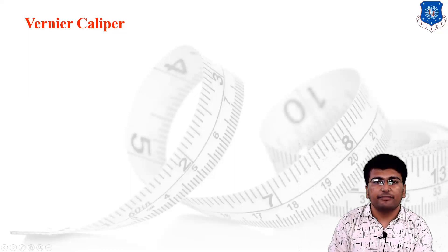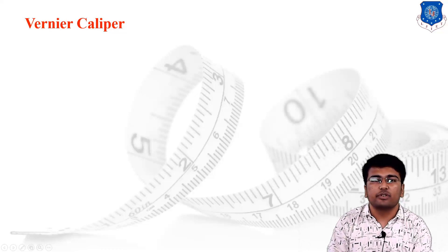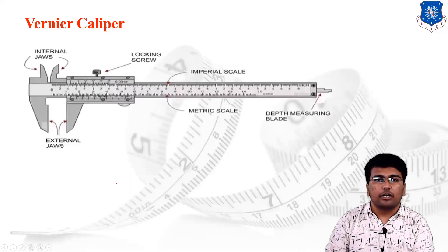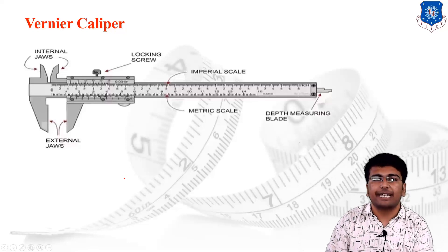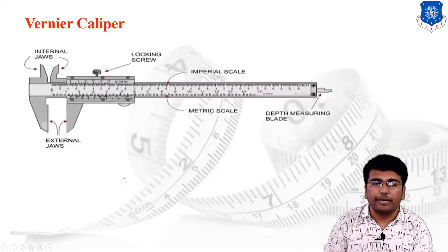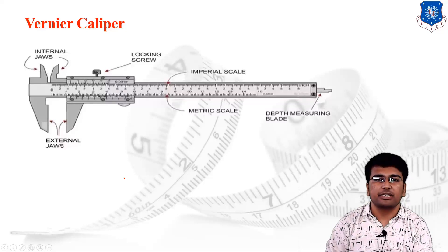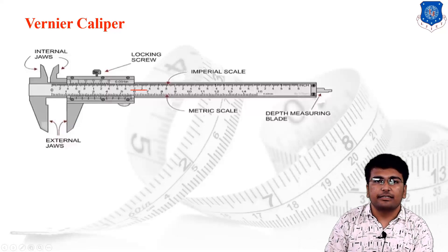Now we are going to discuss linear measuring instruments. The most basic instrument for measurement in terms of linear dimensions is the vernier caliper. Though the scale is a very basic instrument, we are already aware of it, so we will move directly to the basic mechanical instrument useful in industries for measurement. The figure shown on your screen is a basic vernier caliper.